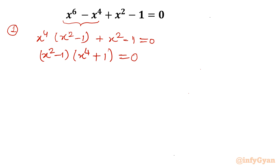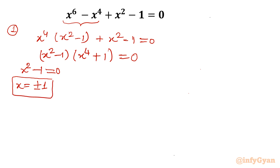Now one thing is very clear. Once you put x² - 1 = 0, you get x = ±1. So we have to find 6 solutions in total. Out of 6, we have found x = ±1. Now let's find the solution of the remaining equation x⁴ + 1 = 0.